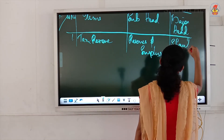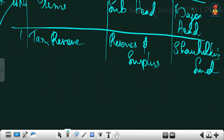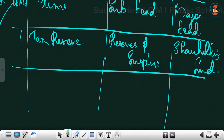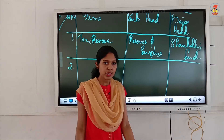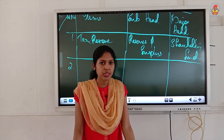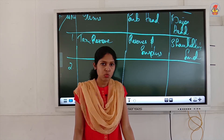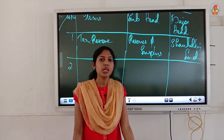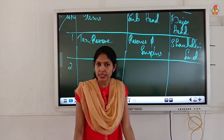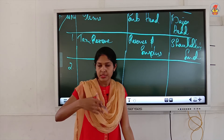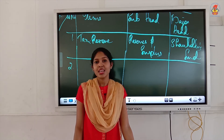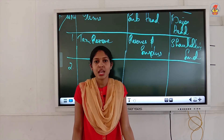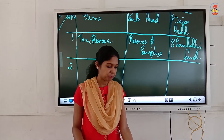Second one: interest on calls in advance. If you look at other current liabilities, calls in advance is listed there as an example. Interest on calls in advance is related to that — it is a kind of liability, so it comes under other current liabilities, and the major head is current liabilities. Calls in advance has the same answer.